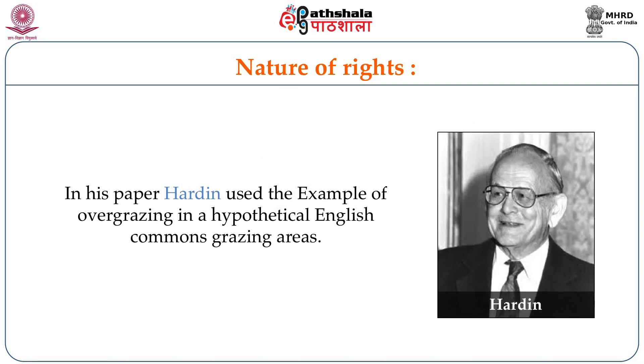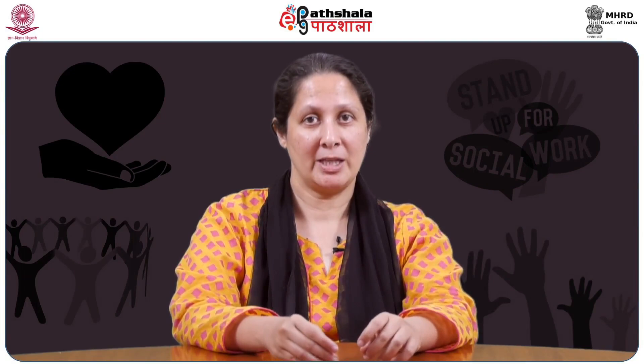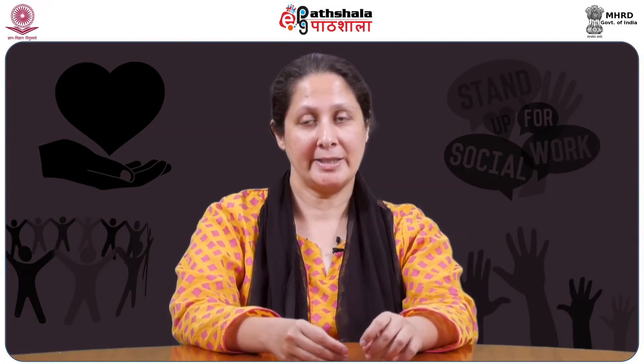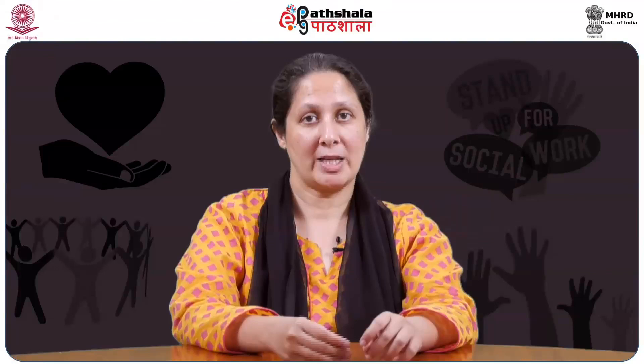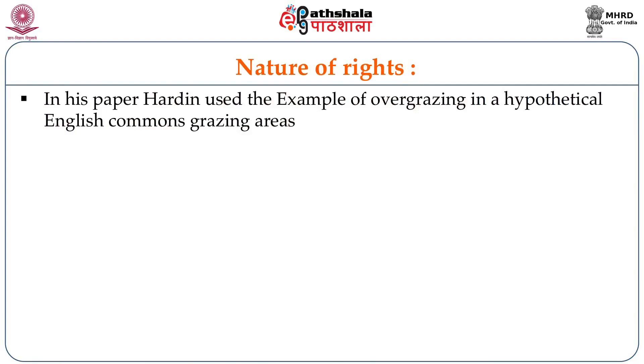In 1968, Garrett Hardin, a biologist, wrote a paper titled 'Tragedy of Commons.' He argued that common resource use leads invariably to degradation. According to him, individuals always make selfish choices. He talked about the finiteness of global resources and concluded that there is a need to self-regulate resource use. Hardin believed this can be possible only through private ownership or strict government control over all resources. In his paper, Hardin gave a theoretical example describing a situation in British grazing lands, known as commons.